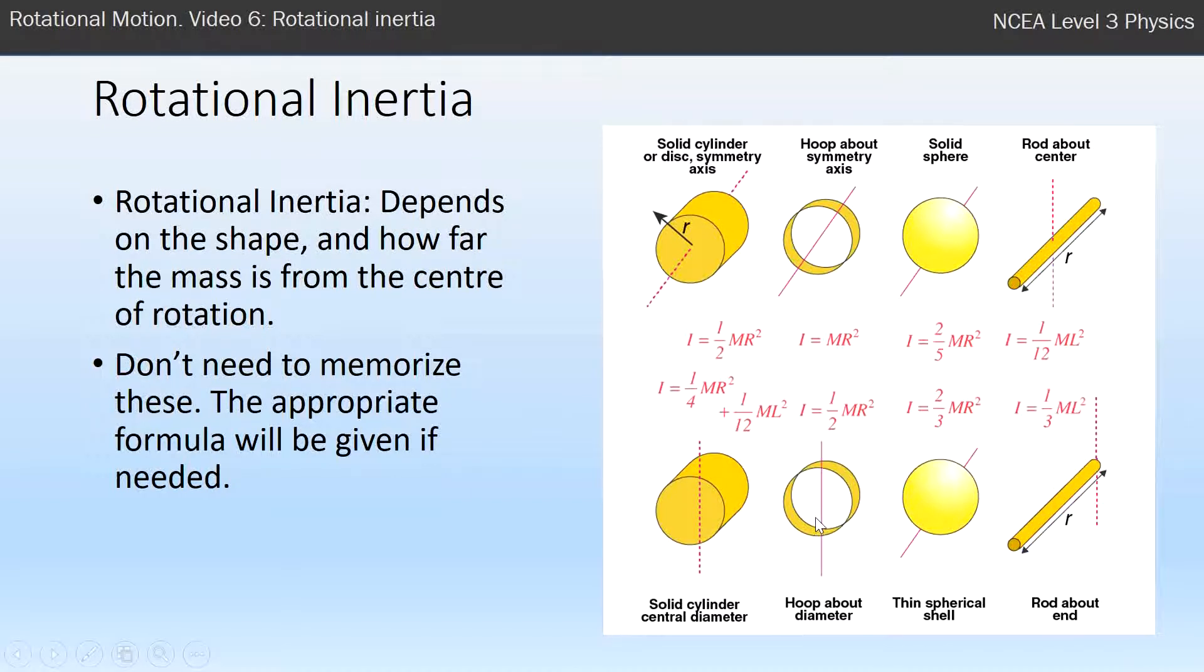Similarly, hoops which are thin compared to cylinders which are solid. A thin spherical shell is different from a solid sphere in that a solid sphere is solid all the way through, but a shell has all its mass just on the outside and its I equals two-thirds MR squared. So that's a bigger rotational inertia than a solid sphere because a solid sphere has some of its mass towards the center.